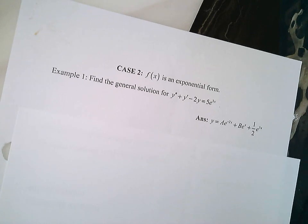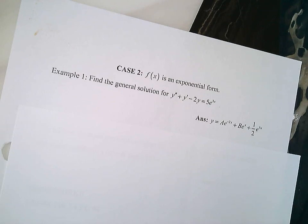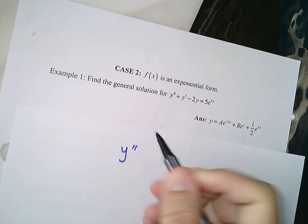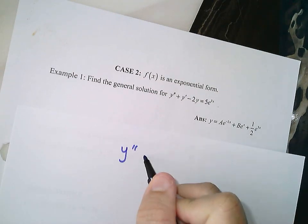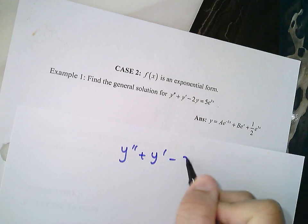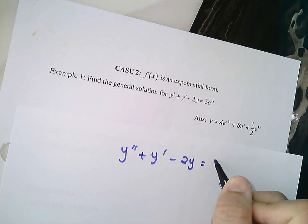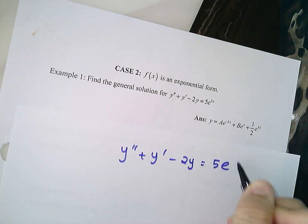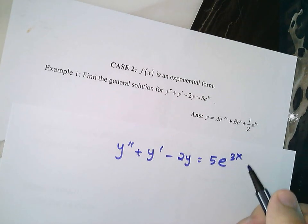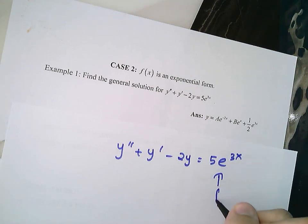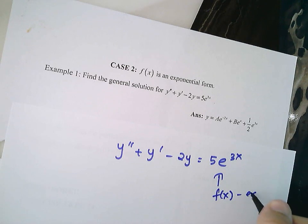You are asked to find the general solution of y double prime plus y prime minus 2y is equal to 5e^(3x). Why is this Case 2? Because your f(x) here is an exponential function.